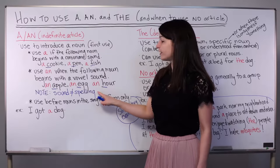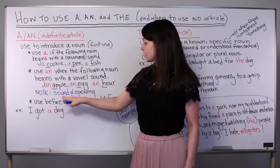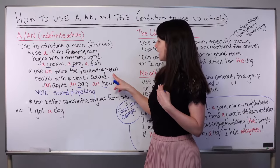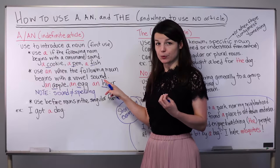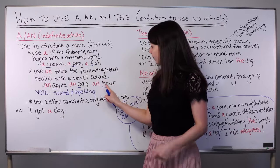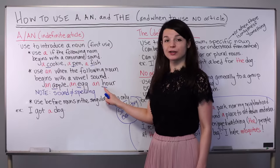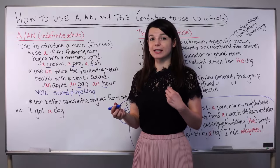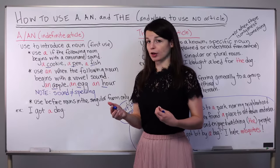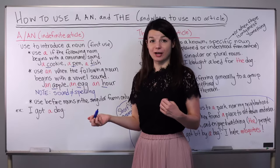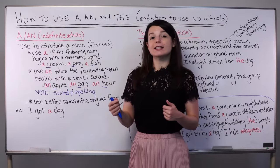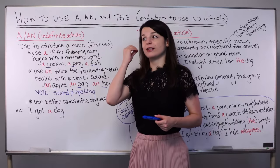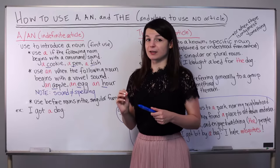This is a great example of an important note: sound does not equal spelling. When the following noun begins with a vowel sound, we use an. With 'hour,' yes, we have the consonant H beginning this word, but it makes a vowel sound — an hour. It's like the H doesn't make that H sound. So, an hour. We use this indefinite article 'an' instead of 'a.' Please be careful — we're listening for a sound, not for the spelling in this case.